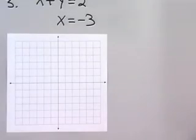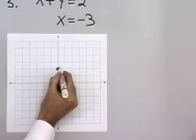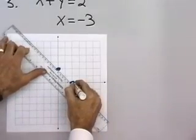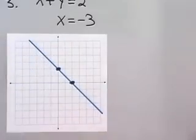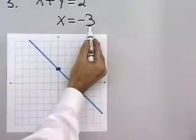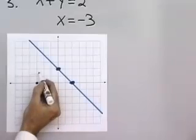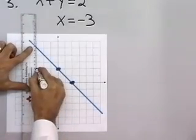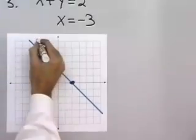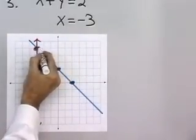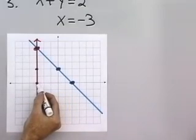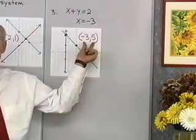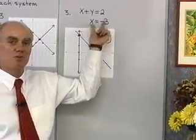Let's try one more. x plus y is equal to 2. When x is 0, y is equal to 2, and when y is equal to 0, x is equal to 2. Those are my intercepts for that equation, so let's draw a line between them. My second equation is x is equal to negative 3, meaning x is negative 3 and y can be anything. Draw a line through those points. Here's the point where the two graphs intersect at x equal negative 3, y equal 5. So x equal negative 3, y equal 5 is the only ordered pair that satisfies both of these equations, and therefore it's a solution to this system of equations.